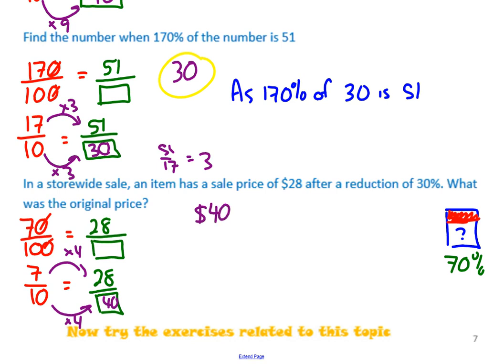And that does make sense. Have a look and think, does it make sense? As you could say, as 70% of $40 is $28. So you can always look and see if it makes sense.